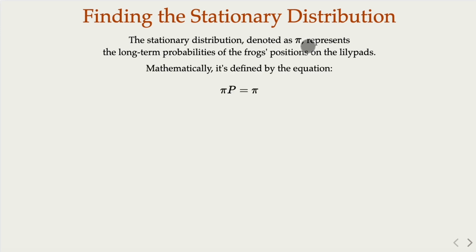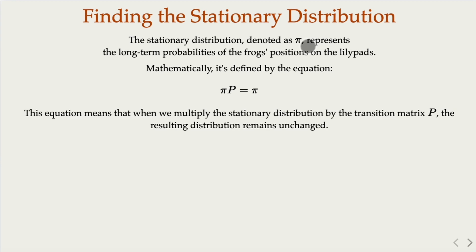So that pi p equals pi. This equation means that when we multiply the stationary distribution by the transition matrix, the resulting distribution remains unchanged. Our goal here is to find pi.